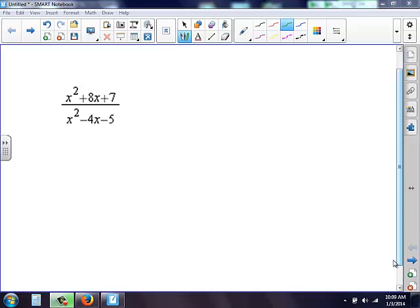Here we have the problem x squared plus 8x plus 7 all over x squared minus 4x minus 5. Now don't be tempted just to go like that. You cannot do that.